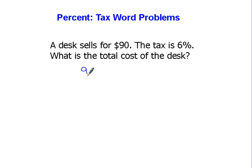We're going to take the amount of money that it costs and we're going to first figure out what the tax is. 6% is equal to 0.06, not 0.6.